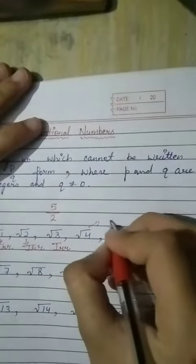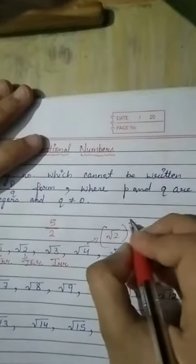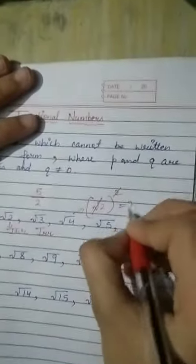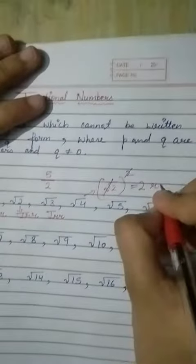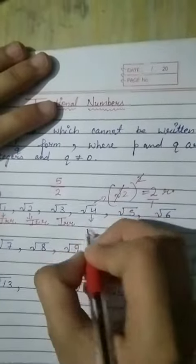Now, √4 we can square. Like, √2 whole square. Okay, so here the square cancels with the root, so you get 2. Means, this becomes a rational number, in the form 2 by 1. So this will not be irrational, this is rational.